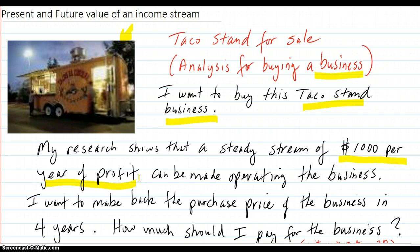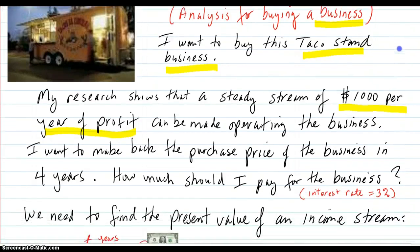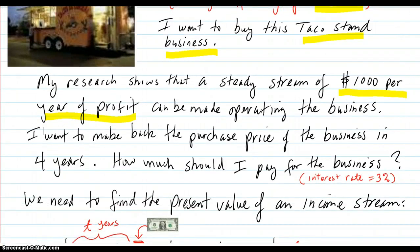My research shows that a steady stream of $1,000 per year of profit can be made operating the business. That's steady, it comes in every hour, every day, steady. That's different than one chunk of pay per year. It's not coming in one chunk, it's steadily streaming in the way you would have it if people were walking by paying.